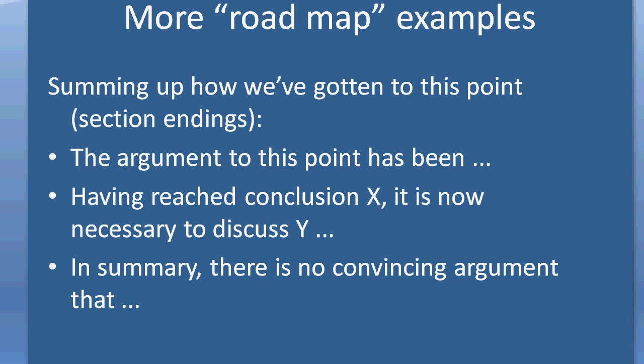There are other examples of roadmap-type sentences that one might use — these could also be thought of as section endings or milestones, putting down a marker and saying we've got to this point. Sentences like that might start with a phrase like 'the argument to this point has been' — so you're summing up. Or: 'Having reached conclusion X, it is now necessary to discuss Y' — you're reminding the reader that you've run a long argument and that it leads to a next logical point. Or when you've spent a part of a paper clearing away an argument, explaining why something is not necessary, you might have a sentence beginning with something like 'in summary, there is no convincing argument that.' These all have elements of bridging techniques we've discussed in previous screencasts.